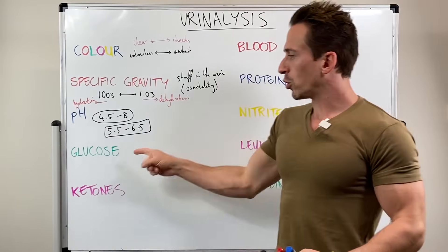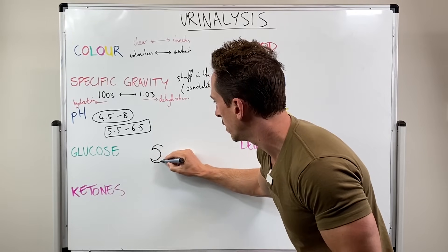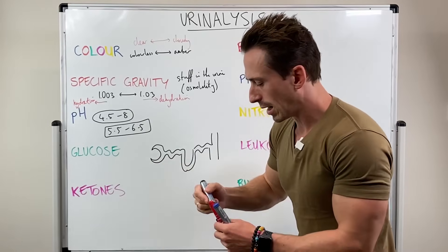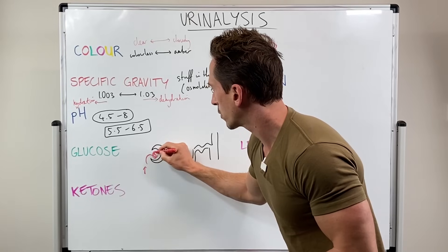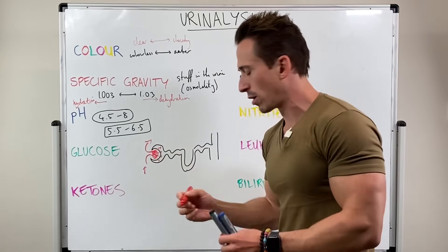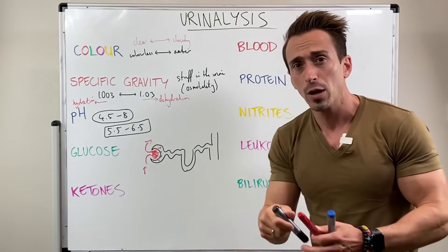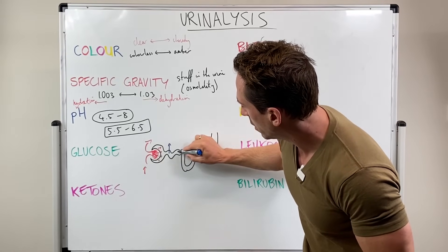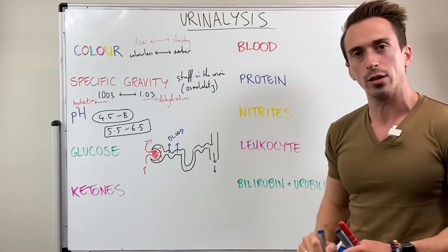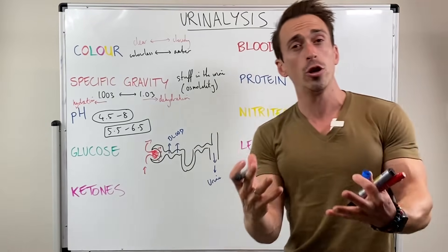Glucose is small enough for the kidneys to filter. At the filtration unit of the kidney, the nephron, blood enters and passes through the glomerulus filtration membrane. Glucose is small enough to get filtered into the tubules of the nephron, but what should normally happen is all the filtered glucose gets reabsorbed back into the blood. That means urine shouldn't actually have glucose in it.